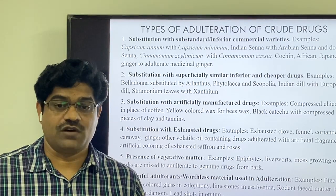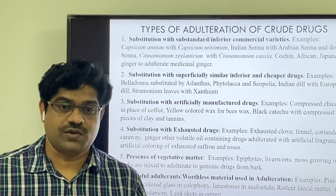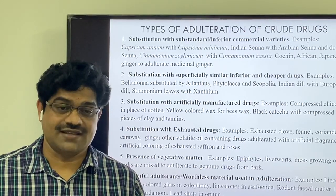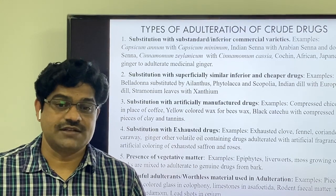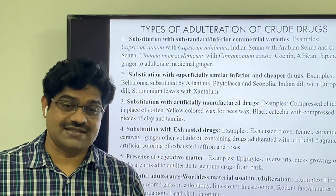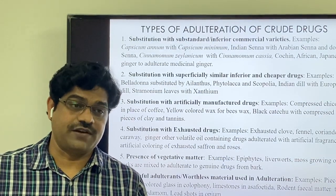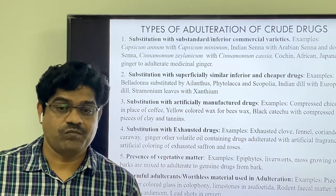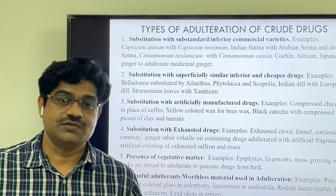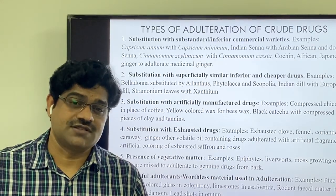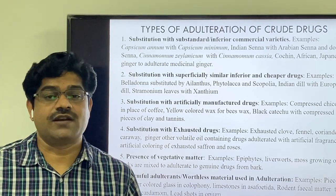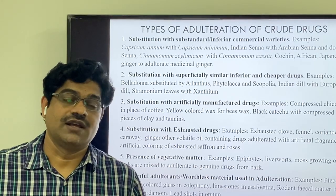The next type is the presence of vegetative matter — such as epiphytes, liverworts, or moss growing on barks — which can be used to adulterate genuine bark drugs like slippery elm bark or cascara bark. The next type involves harmful adulterants or worthless materials, such as pieces of amber, colored glass in colophony, limestone in asafoetida, rodent fecal matter added to cardamom seeds, and lead shots introduced into opium. These are very harmful adulterants.